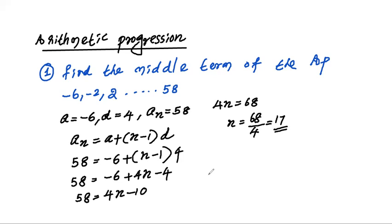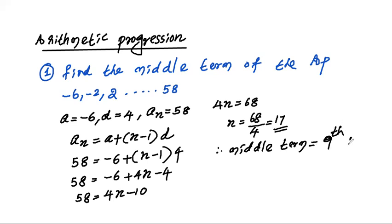So from minus 6 to 58 in this entire AP, 17 terms are there. If 17 terms are there, by common sense we know that the middle term will be the 9th term. The 9th term will be the middle term for the given AP.